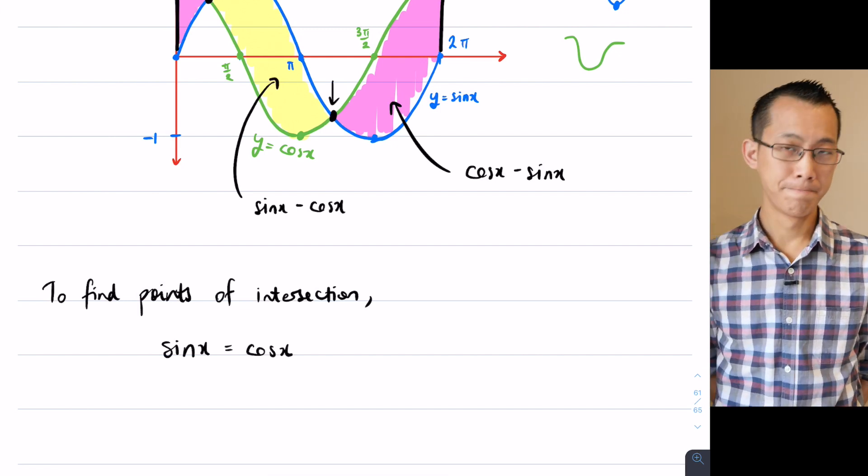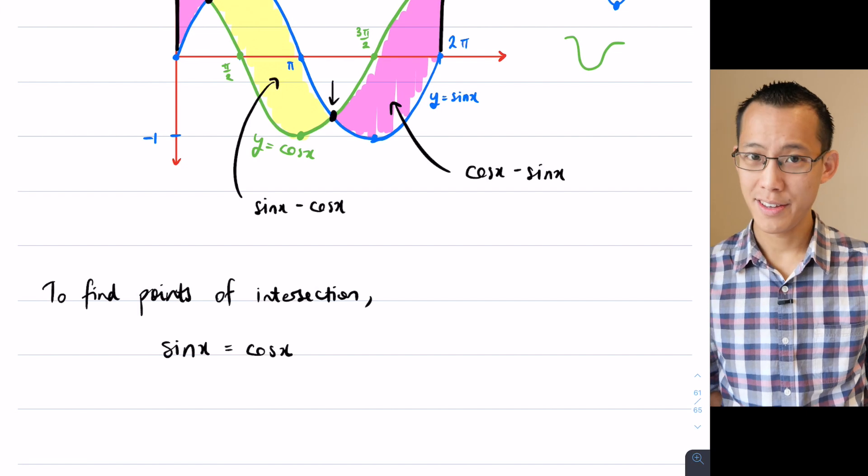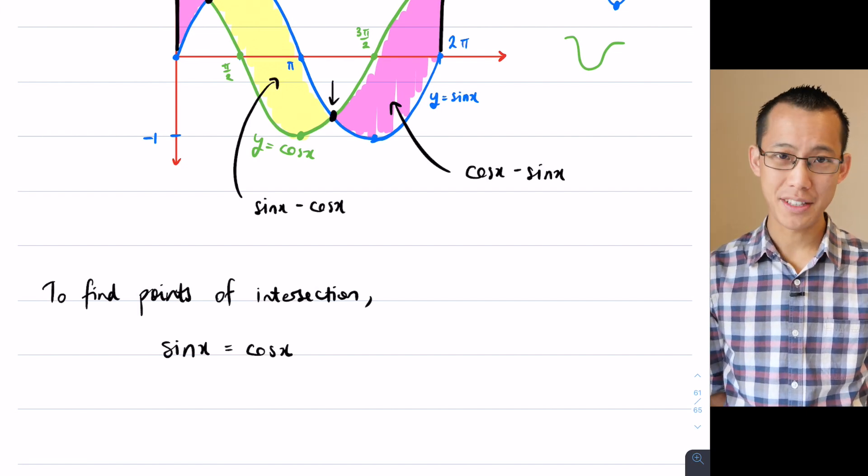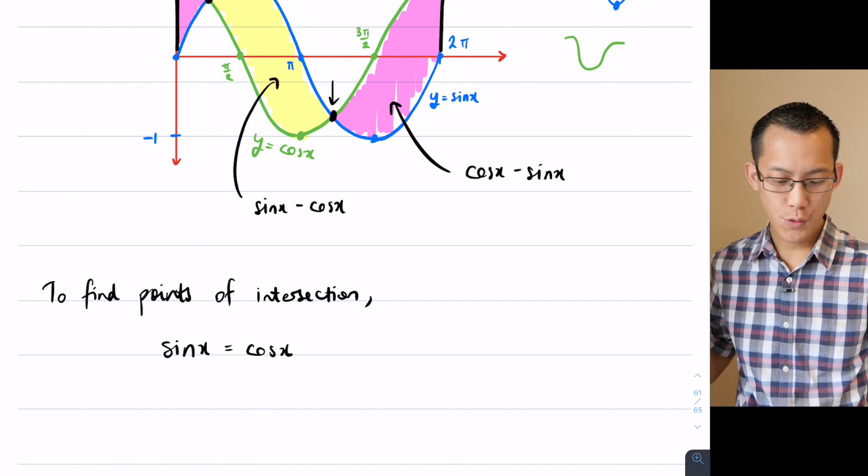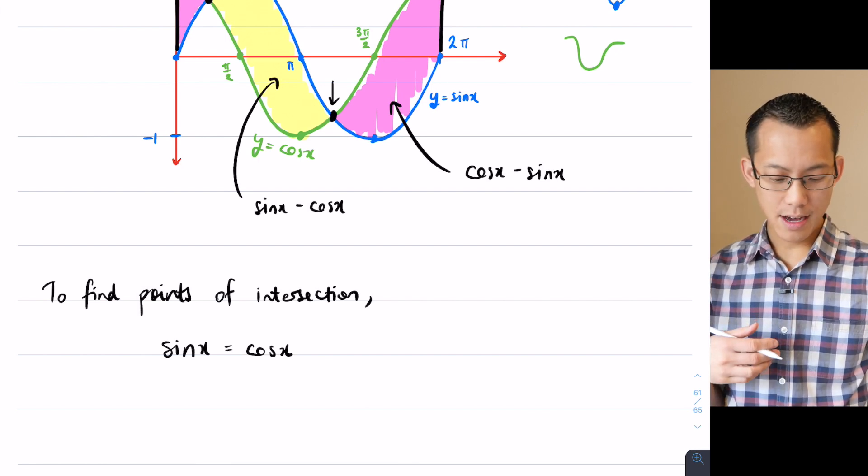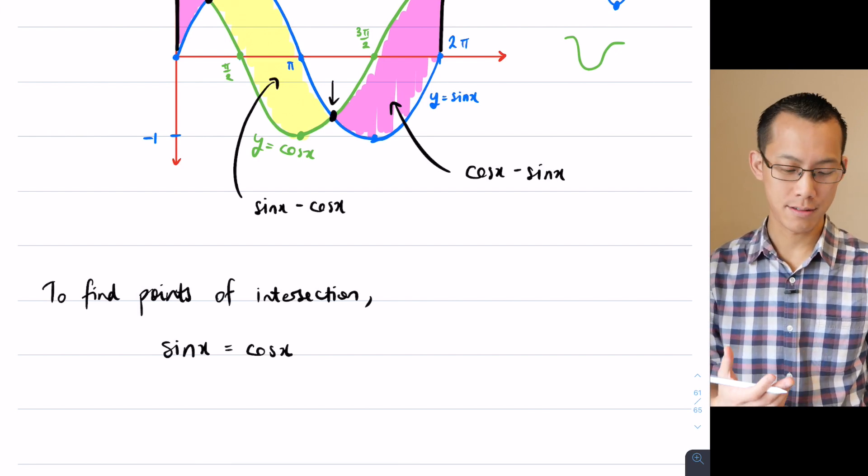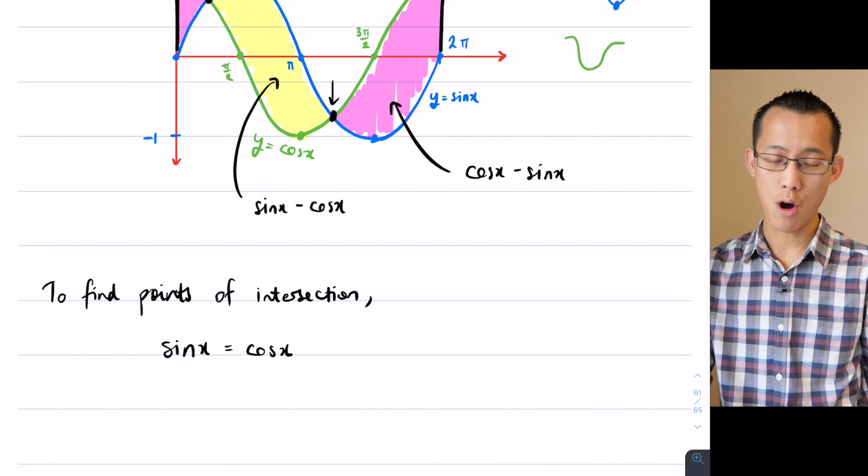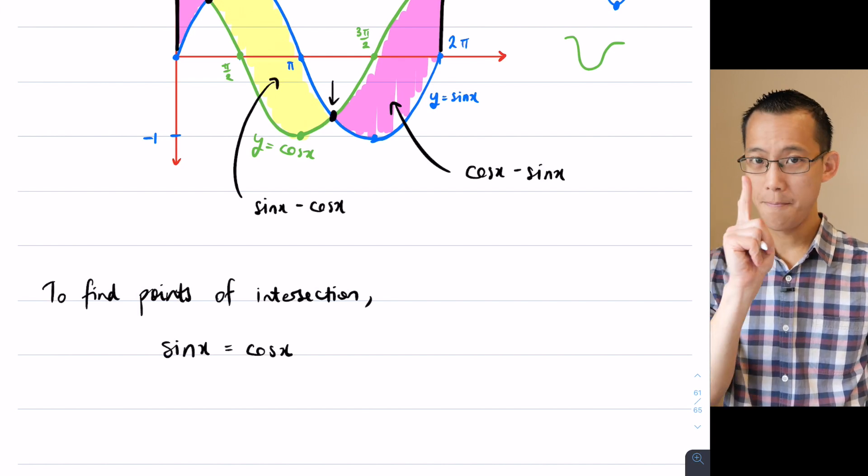Now at this point you're like, definitely have not done these for a while. How am I going to find the points of intersection? Well, you've got two trig functions and the easiest thing to do is to turn two trig functions into one.